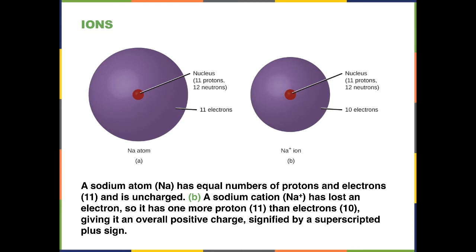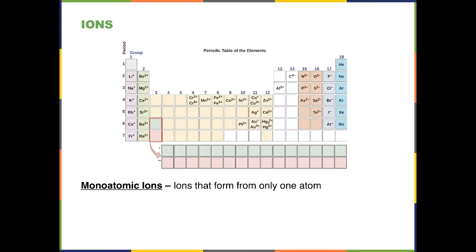Ions are simply atoms that have lost or gained an electron. A sodium ion, for example, has lost an electron and has more protons than electrons, and is thus signified by a positive sign beside the formula. The superscript plus sign means there is one more positive charge than negative charge. Some ions are formed by only one atom and are called monoatomic ions. On the periodic table, ions on the right tend to be negative and on the left they tend to be positive.